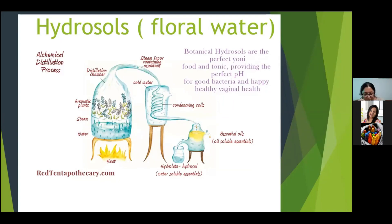We got a question: what oils can be extracted in a field distillation — the common ones that the farmer grows? The common ones are lemongrass, mint, vetiver, patchouli, frankincense, citronella, and eucalyptus. There are many, but these are the common ones we get directly from the farmer's field.